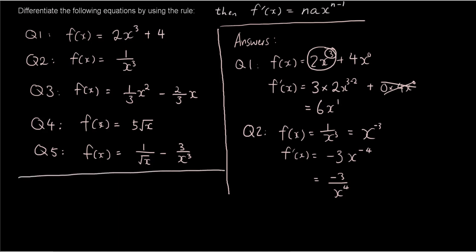Let's do question 3. We have f(x) equals 1 third of x squared minus 2 over 3x. So what we're going to do is f'(x) equals, move the 2 to the front, 2 times 1 third, so that's just 2 over 3x minus 1 in the power, so that's just x.